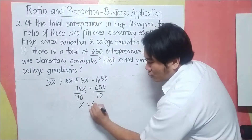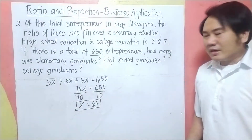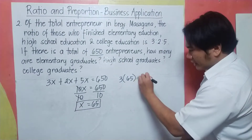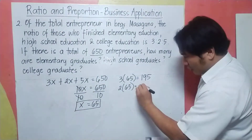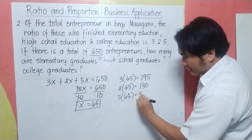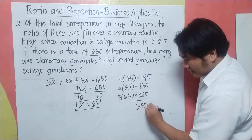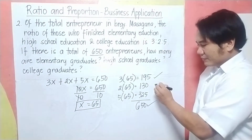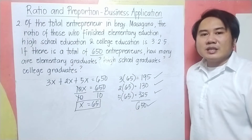Therefore x equals 65. Substituting back: 3x equals 3 times 65, which equals 195; 2 times 65 equals 130; and 5 times 65 equals 325. Adding 3x, 2x, and 5x should give 650 as a check. Therefore, 195 entrepreneurs graduated from elementary, 130 have high school education, and 325 have college education.